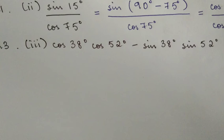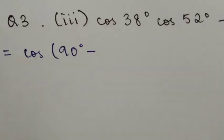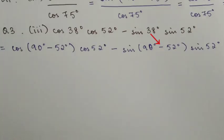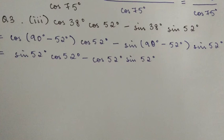Since 38 = 90 - 52, we can write cos 38° as cos(90° - 52°). Similarly, sin 38° = sin(90° - 52°). Using the complementary angle formulas, this becomes cos(90° - 52°) cos 52° - sin(90° - 52°) sin 52°.